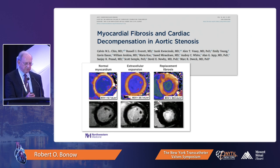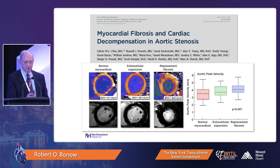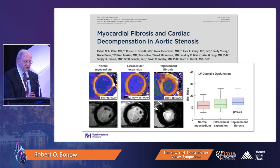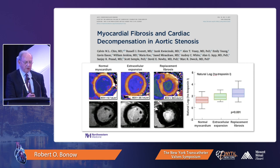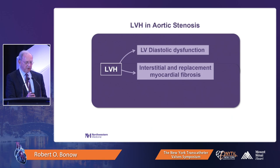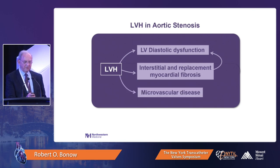Going from left to right across those three groups, patients have more severe aortic stenosis, greater left ventricular hypertrophy, increased LV mass, and greater diastolic dysfunction. Most interesting is that they are also leaking troponin, suggesting actual myocardial damage underlies the fibrosis development. Putting this together: LVH creates diastolic dysfunction and leads to interstitial and replacement myocardial fibrosis, which worsens diastolic dysfunction; microvascular disease can cause myocardial ischemia, compounding both. LVH may therefore be a therapeutic target.